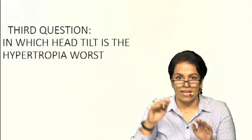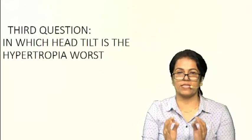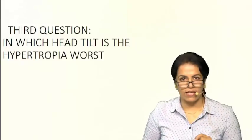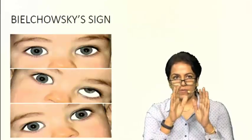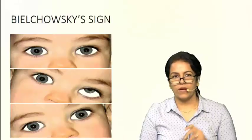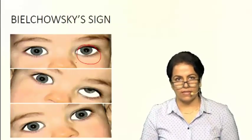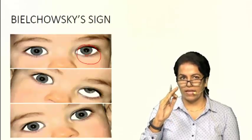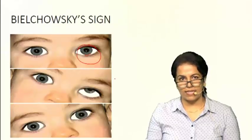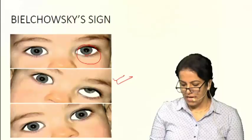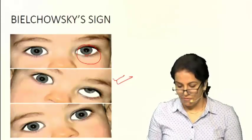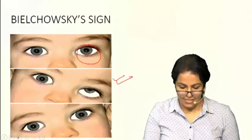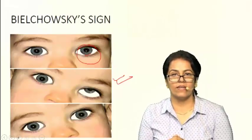This increase of hypertropia on tilting the head to the same side is what we call Bielschowsky's sign. Looking at the clinical image shown: in this child, the left eye is hypertropic — the light reflex in the right eye is at the center of the pupil, while in the left eye it is displaced lower down. On tilting the head to the left side — same side head tilt — the hypertropia increases further, which is not happening on the opposite side head tilt. This confirms left superior oblique palsy — this is Bielschowsky's sign.